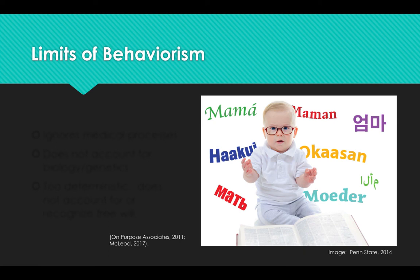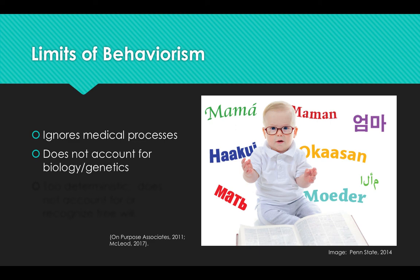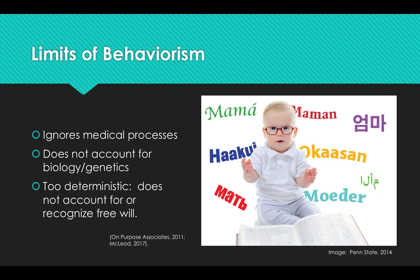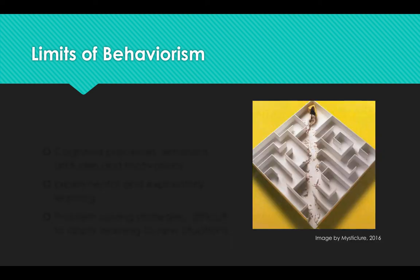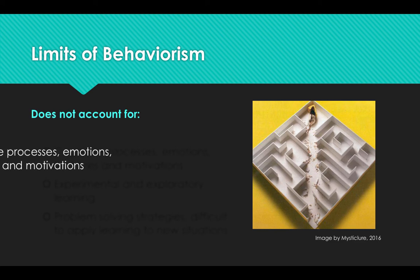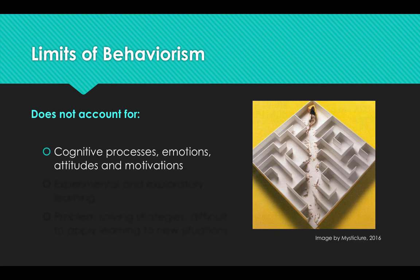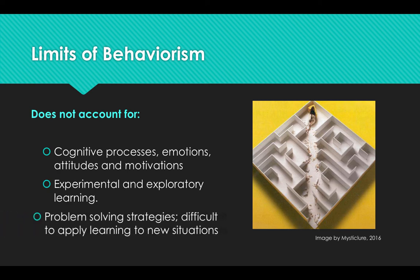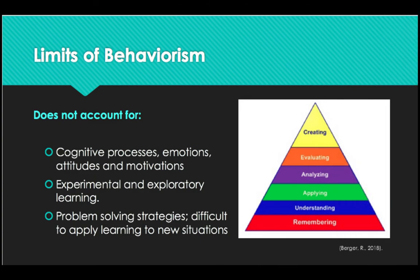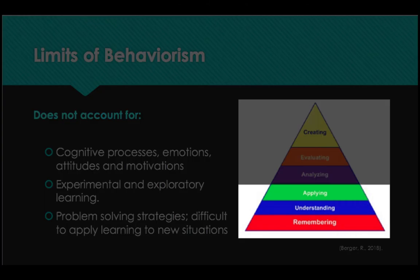There are several limitations to behaviorism as a learning theory. For example, behaviorism fails to explain why some learning — such as the recognition of new language patterns by young children — exists when there is no reinforcement mechanism. Behaviorism also does not recognize human free will, instead explaining all behavior as a result of environmental influence. Furthermore, it does not take into consideration how cognitive processes, thinking, emotions, motivations, and attitudes affect learning, nor does it account for experiential learning, exploratory learning, or critical thinking and problem-solving strategies. Based on this theory alone, it would be difficult to apply learning to new situations.